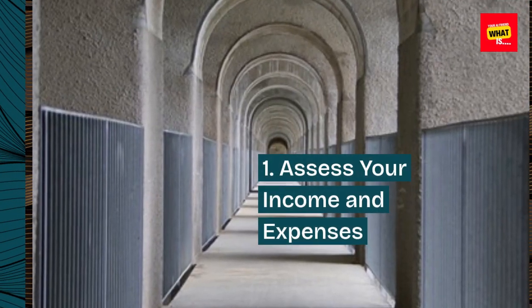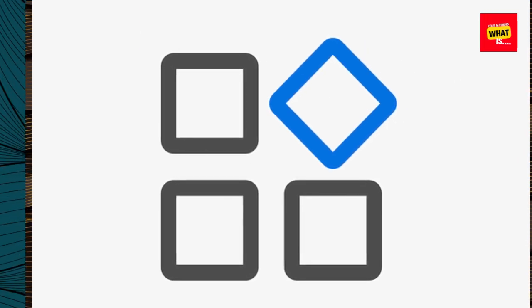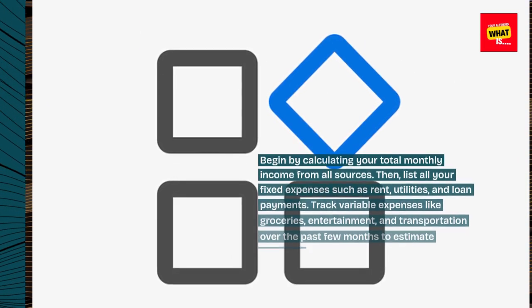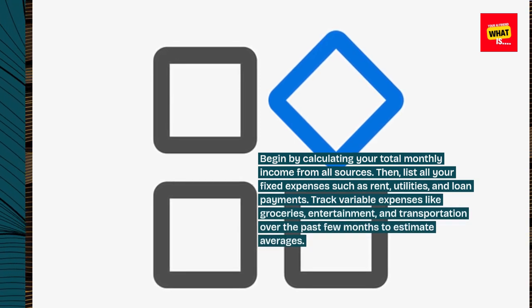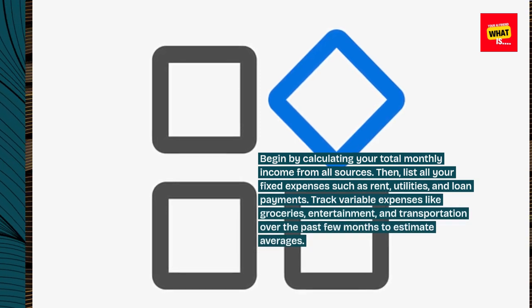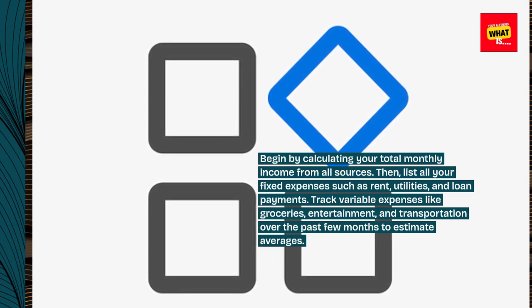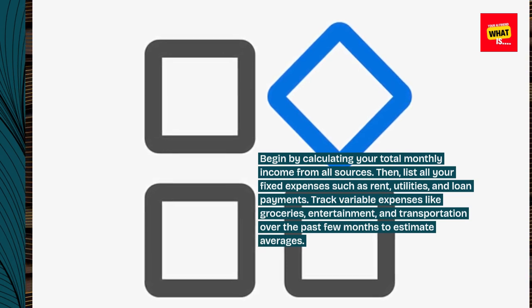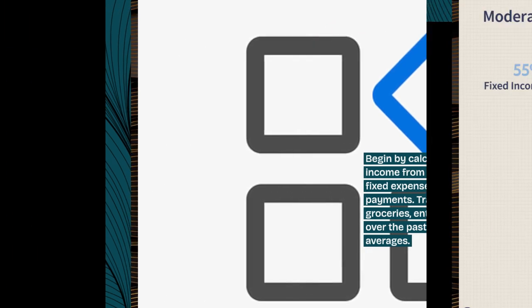1. Assess your income and expenses. Begin by calculating your total monthly income from all sources. Then, list all your fixed expenses such as rent, utilities, and loan payments. Track variable expenses like groceries, entertainment, and transportation over the past few months to estimate averages.